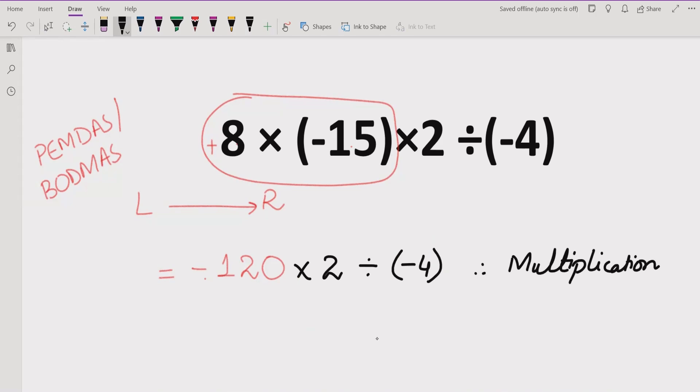Now we will move forward and see which expression we will solve next. This one we will solve first: minus 120 multiplied by 2 equals minus 240 divided by minus 4. Here we solved the multiplication again.